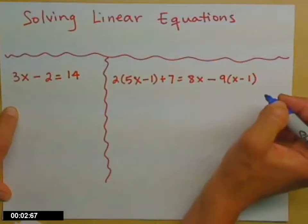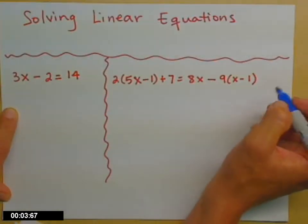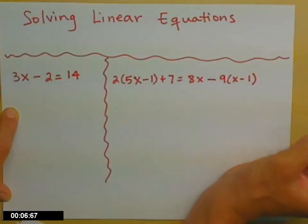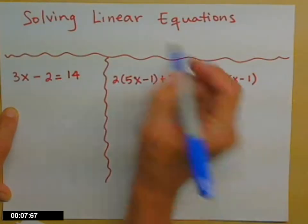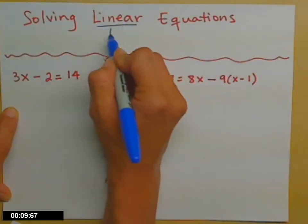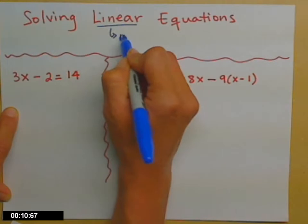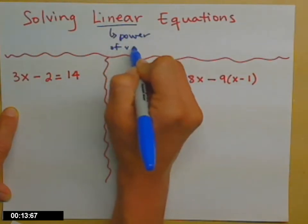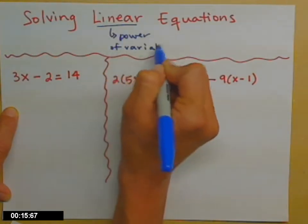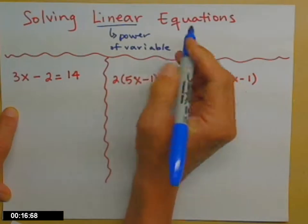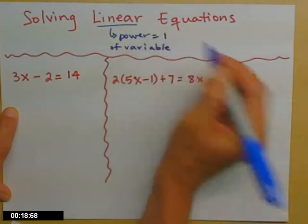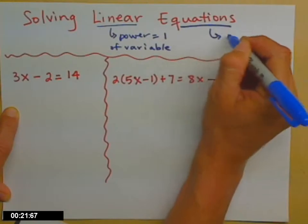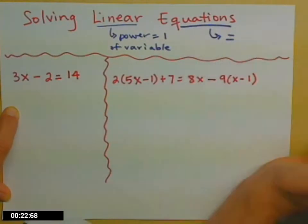First we want to solve a linear equation. We need to know what a linear equation is and how we recognize it. Linear refers to the power of the letter, also called variable. It's linear if that power is 1. And an equation has to have an equal sign.